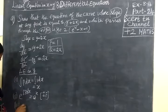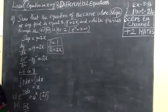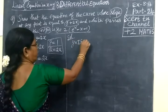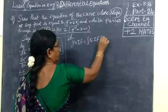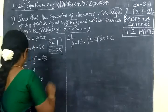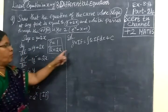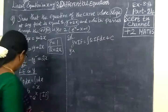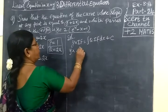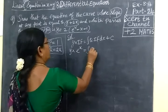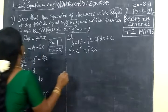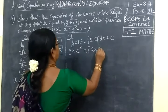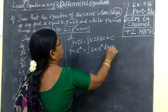Then the third step: we have to write the solution. The solution is y into IF equal to integral Q into IF into dx plus c. So y into e power -x equal to integral 2x into e power -x dx plus c.